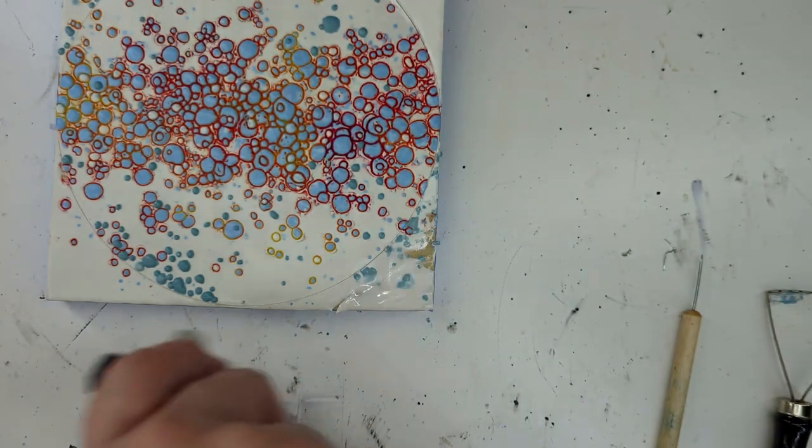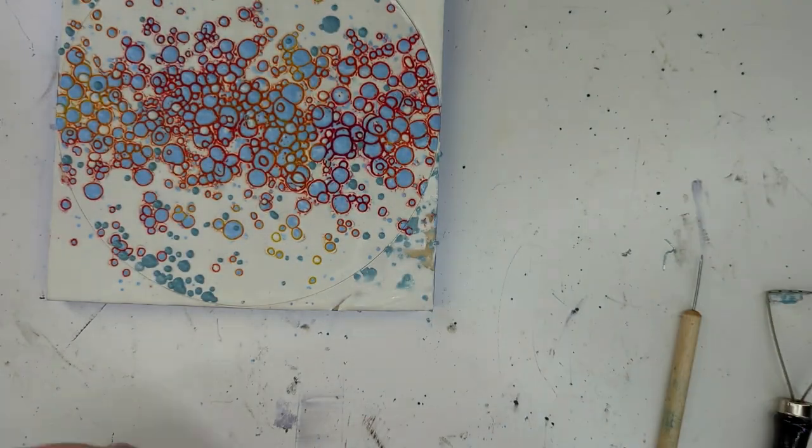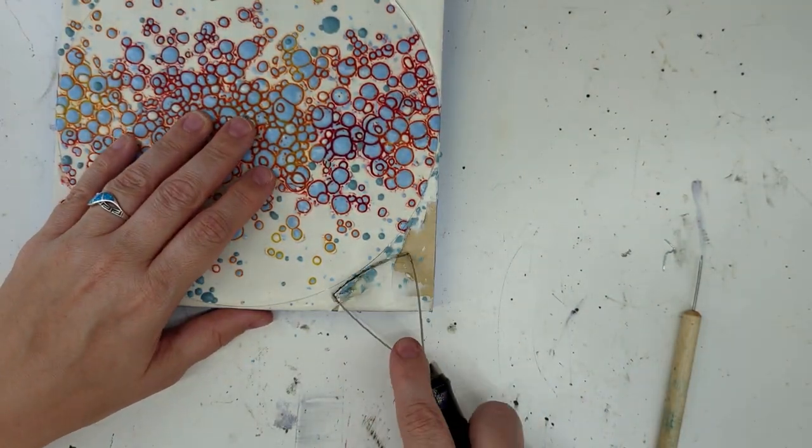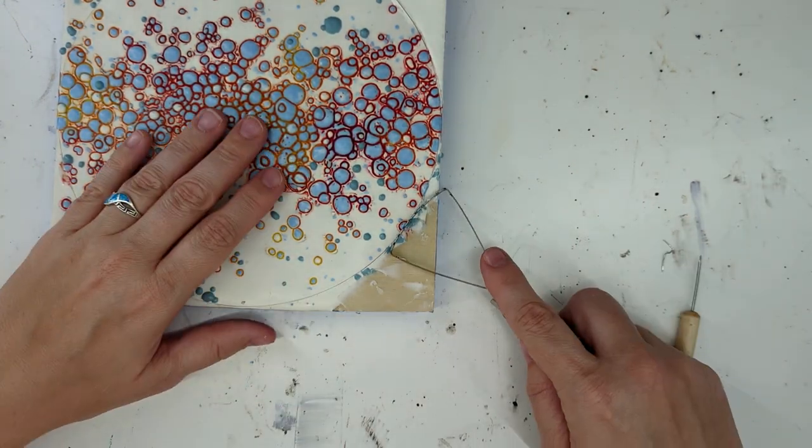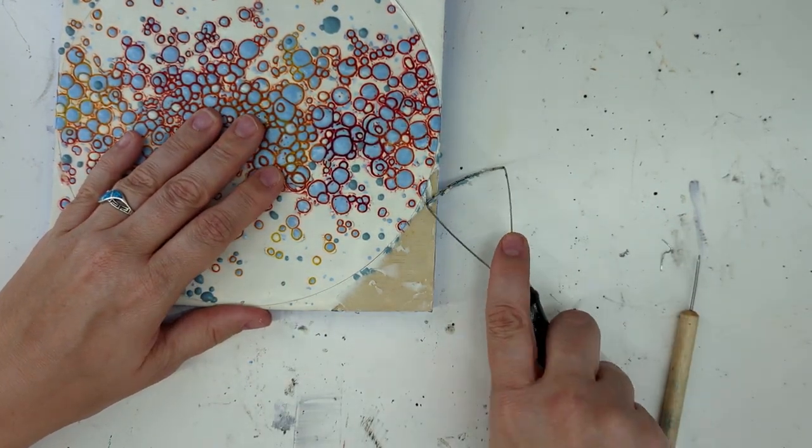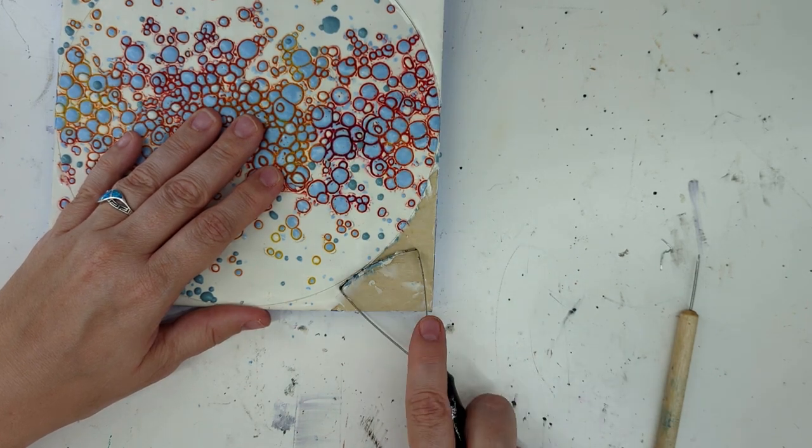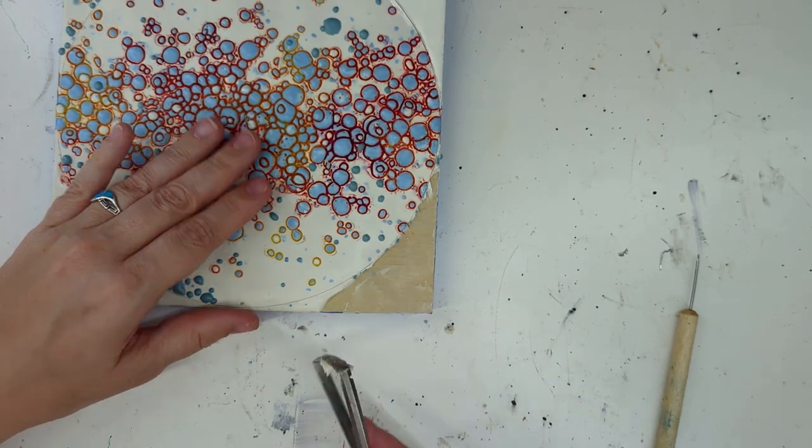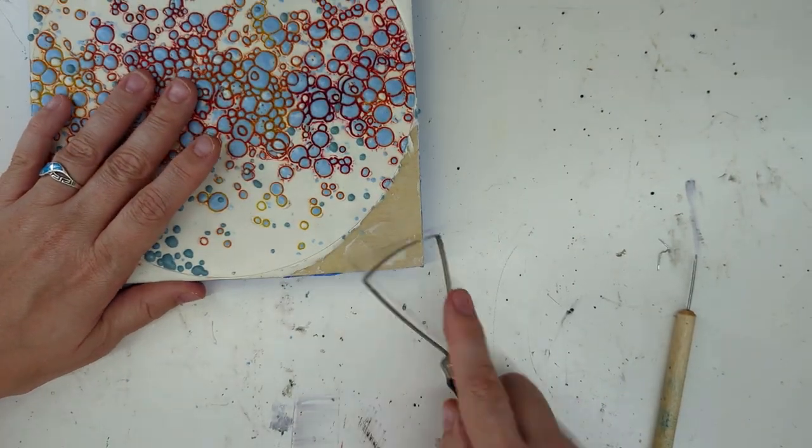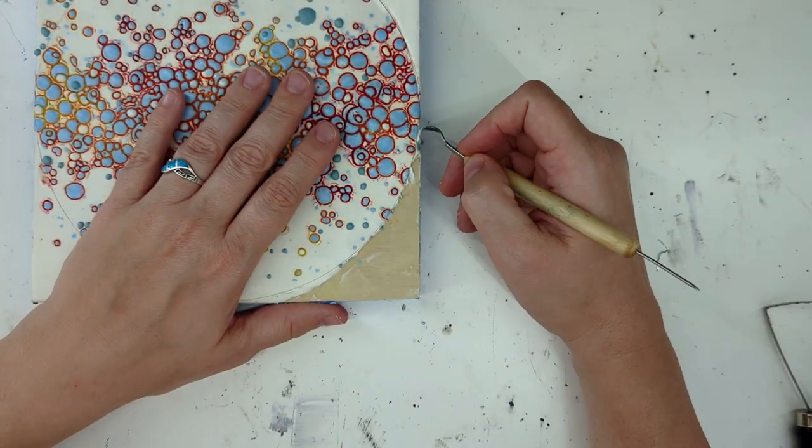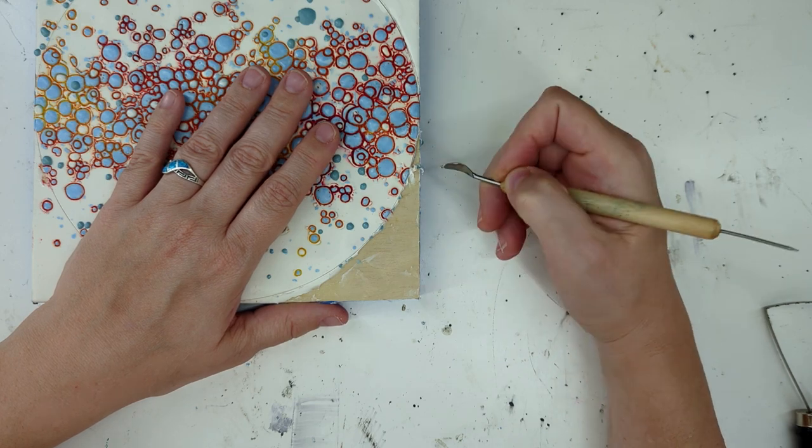But again, this is always an option. Scraping down to the wood and reapplying the wax is actually a fairly easy process. And sometimes it's easier to do that than to do something maybe a little bit smaller or less drastic, but I'm really trying to sharpen up this line.